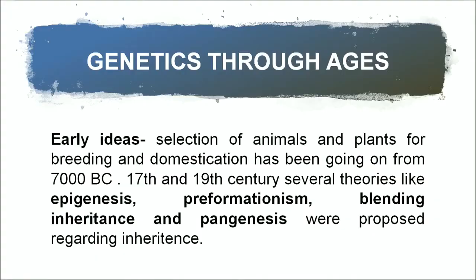In early ideas, since the time of 7000 to 8000 BC, people were selecting animals and plants. The plants and animals were selected based on desired characters like high milk producing and high yielding varieties. They were selected for domestication or cultivation.